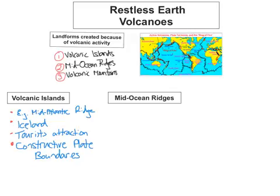The second landform is the mid-ocean ridge. These are a series of mountains that form on the ocean floor because of volcanic activity. In the Atlantic Ocean there is a chain of mountains known as the Mid-Atlantic Ridge, which formed because the American plate is pulling away from the Eurasian and African plates. Mid-ocean ridges form at constructive plate boundaries, and this movement releases magma which forms a series of mountains along the ocean floor.